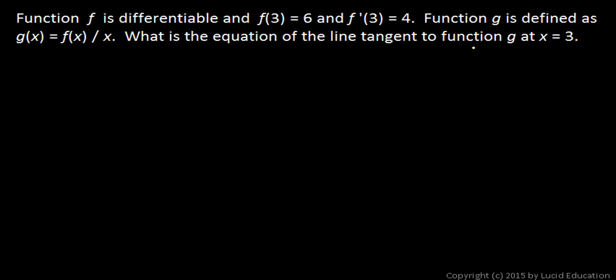So we'll find g'(3) by finding the derivative of function g. Function g is defined as a quotient, so we can find the derivative using the quotient rule. I'll think low d high minus high d low. So that will be the denominator times the derivative of the numerator minus the numerator times the derivative of the denominator, which is just 1, and all of that over the denominator squared.